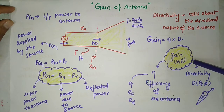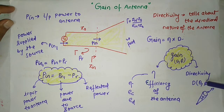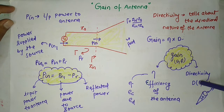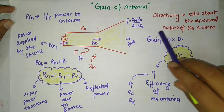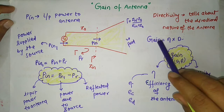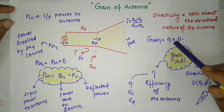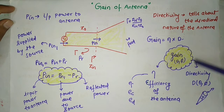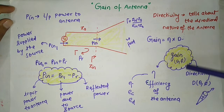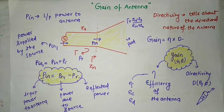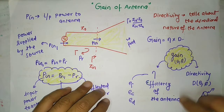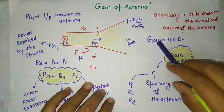Gain depends on directivity. Directivity is a function of theta and phi, which are directional coordinates. Theta is measured from the z-axis and phi is measured from the x-axis. So gain accounts for two things: efficiency and directivity. Directivity tells about the directional nature of the antenna.